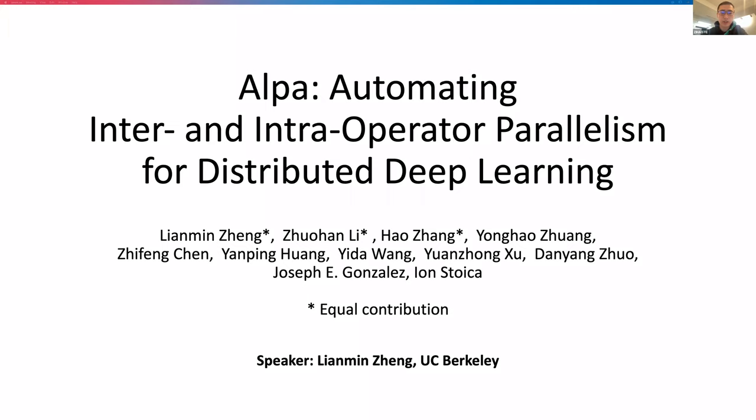First, let me introduce Lian Ming. Lian Ming is currently a PhD student at UC Berkeley. He was a member of the Sample group two to three years ago, where he worked on TVM and other TVM projects. Lian Ming is advised by Ion Stoica and Joseph Gonzalez. His research lies at the intersection of machine learning and programming systems, especially DSLs for accelerated and scalable deep learning. Let's welcome Lian Ming.